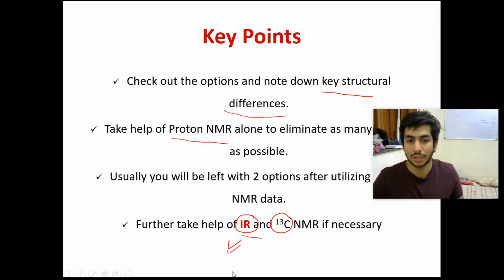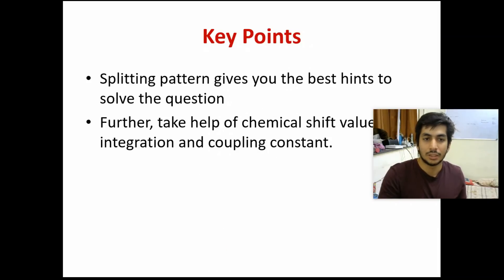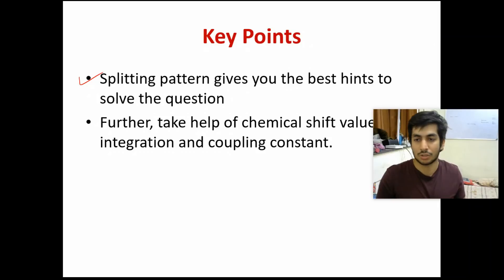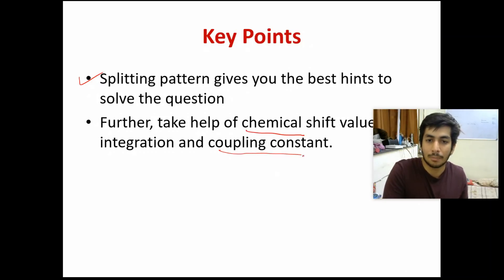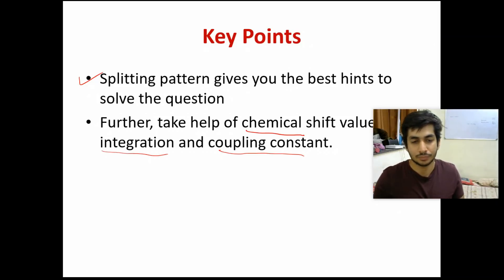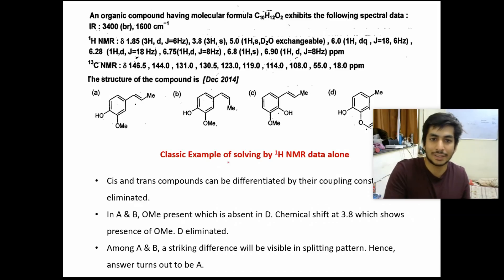The most important of the remaining key points: splitting pattern always gives you the highest amount of information about the structure — whether it's a triplet, quartet, doublet of doublet, quintet, or septet. Then take help of chemical shift, coupling constant, and integration. Integration basically tells you how many protons are in a given signal, sometimes given as '2H' or '3H'. Now let's do a classic question from December 2014.